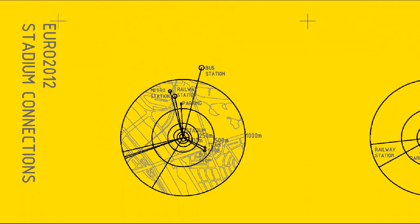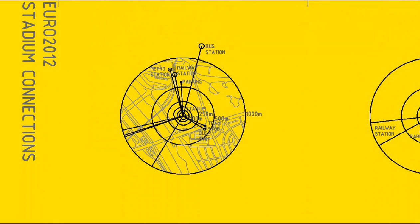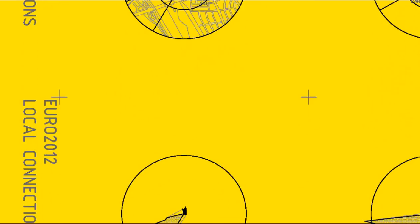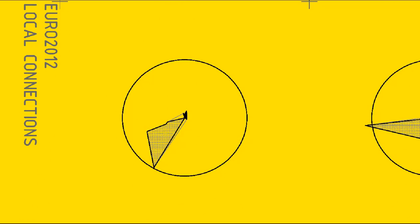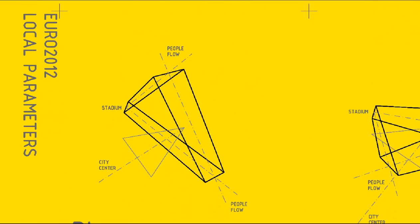Stadium connections are more local and they are related to the closest transport nodes like metro station, railway station, bus stop, tram stop, and parking. They give directions from where participants are coming in close relation to the object. On this schema the sum of connections is visible.